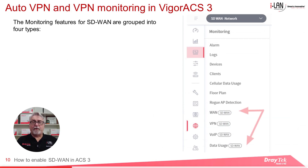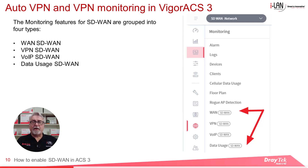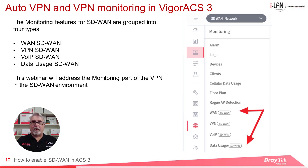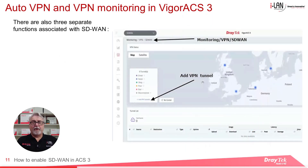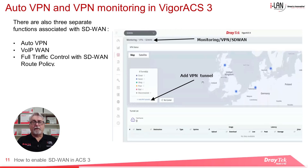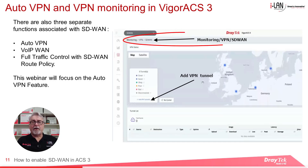The monitoring features for SD-WAN are grouped into four types: WAN, VPN, VoIP, and Data Usage. This includes monitoring the quality of WANs in each category and, if necessary, changing to a different WAN when quality drops below a certain level. There are also three separate SD-WAN functions: AutoVPN, VoIP WAN, and Full Traffic Control with SD-WAN Route Policy. For this webinar we'll focus on the AutoVPN feature, which includes two VPN types that can be monitored with SD-WAN, found under Monitoring > VPN > SD-WAN.